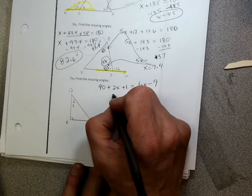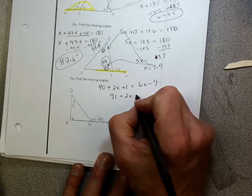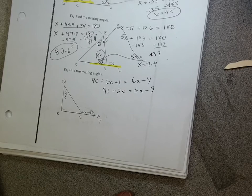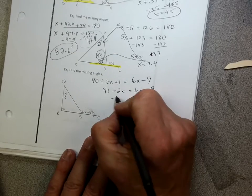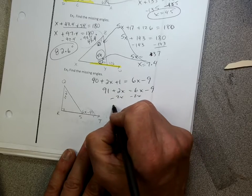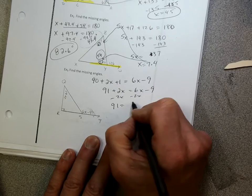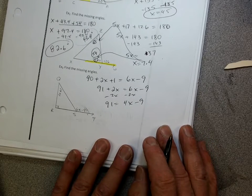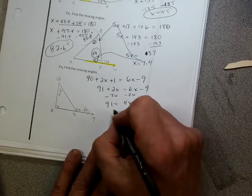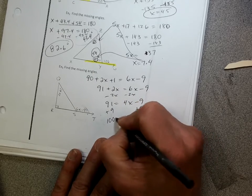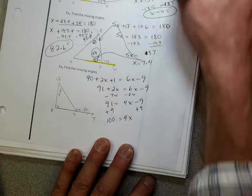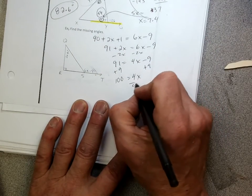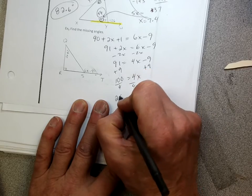So let's solve for x. Go 91 plus 2x equals 6x minus 9. How am I doing? Okay, minus 2x minus 2x. The 91 equals a 4x minus 9. Plus 9, plus 9. Let's see what that is. So 100 equals 4x, right? Divide by 4, divide by 4. I've got 25 equals x.